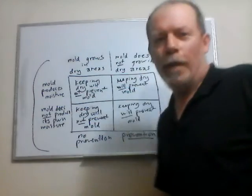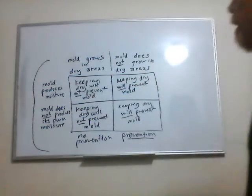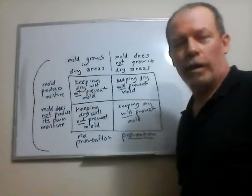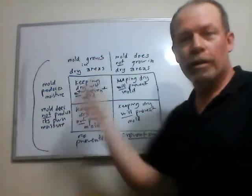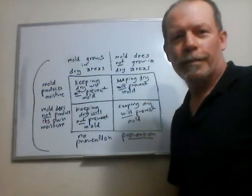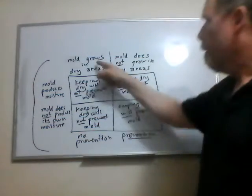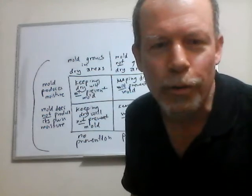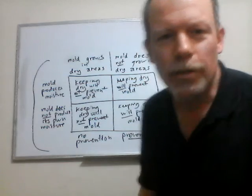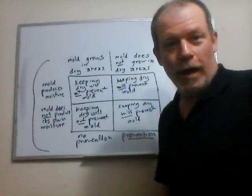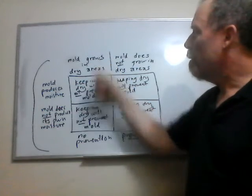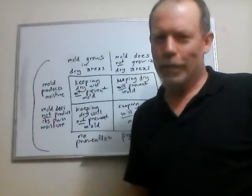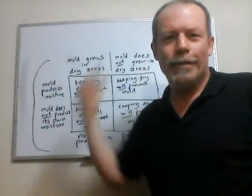First: mold grows in dry areas. Keeping things dry will not prevent mold if it produces its own moisture. So it grows in a dry area and produces its own moisture — you're not going to do much to fight it. Over here: mold grows in dry areas, but mold does not produce its own moisture. Why does it need to produce its own moisture if it grows in dry areas? So whether or not it produces its own moisture doesn't seem to make any difference. It's growing in a dry area — it doesn't need its own moisture, so whether or not it produces it doesn't matter. Trying to keep things dry doesn't matter on this side.